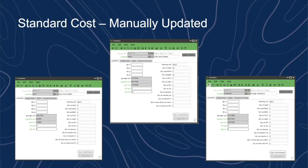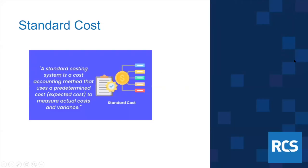We also have standard cost, which is unique to each location. Standard cost is a cost accounting method not used much in retail — sometimes used in manufacturing. It's a predetermined cost used to measure variances. Some places use standard cost for commission calculations, such as when salespeople are commissioned on the amount sold above standard or a margin threshold.